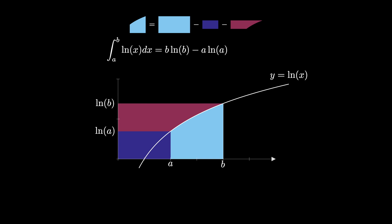Because the natural log function and the exponential function are inverses, this curve is represented by x equals e to the y, so this area can be interpreted as the definite integral from natural log of a to natural log of b of e to the y dy.